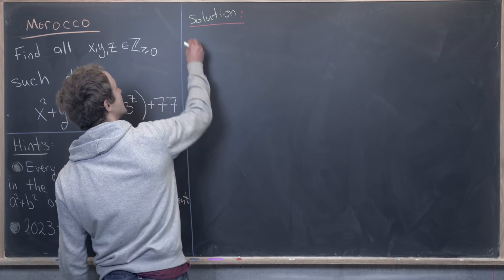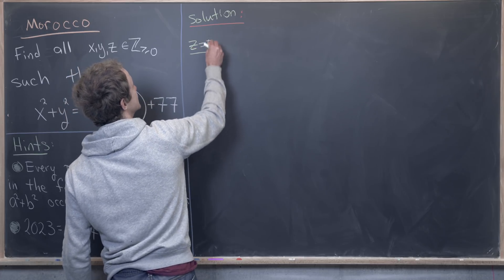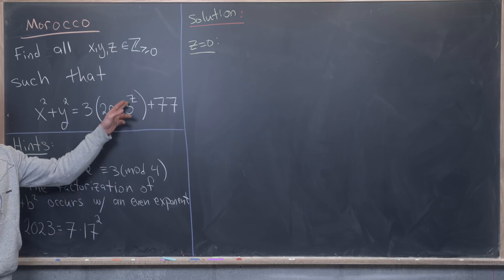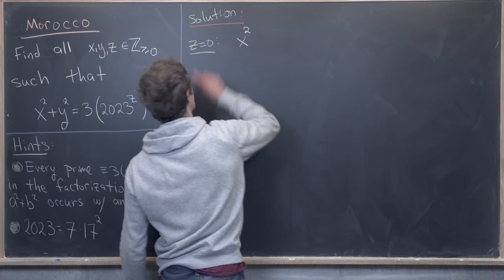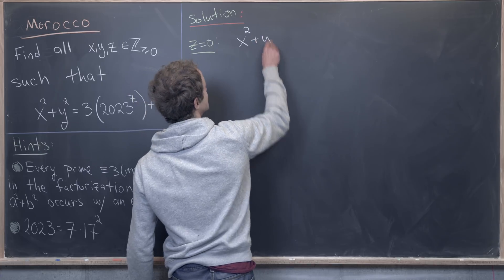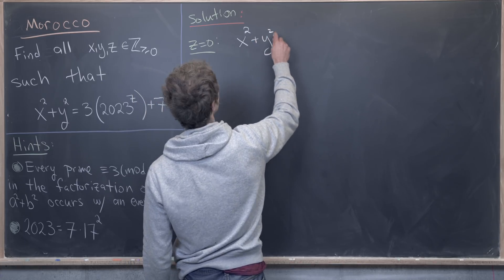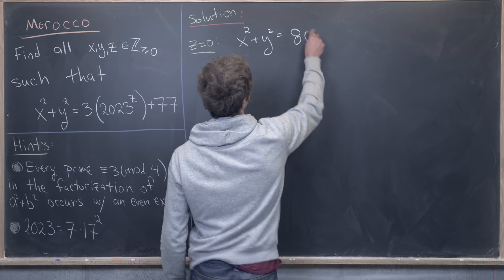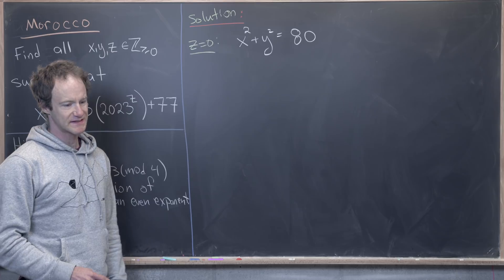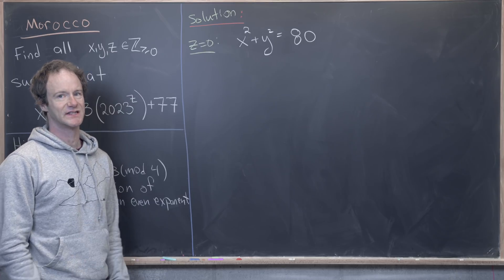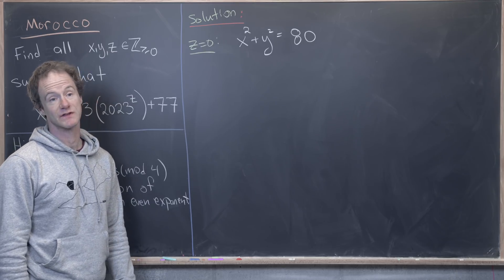So let's see what we get if z is equal to 0. That makes 2023 to the z just equal to 1, which means the equation that we need to solve is x squared plus y squared equals 80. 3 plus 77 is clearly 80. Now you can play around with this and it's not too hard to just guess and check your way until you have a solution.